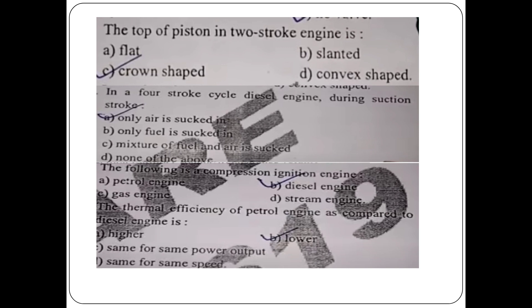The top of the piston in a two-stroke engine — what is the shape of the piston top? The options are: flat, slanted, convex shaped, chrome shaped.